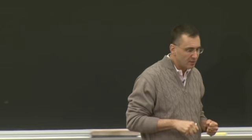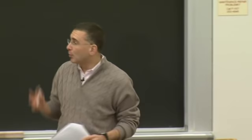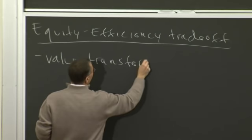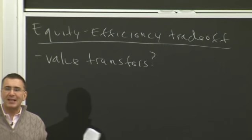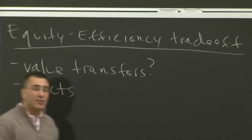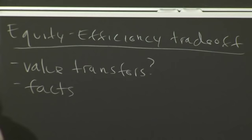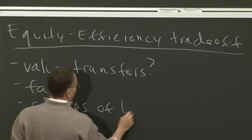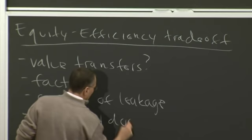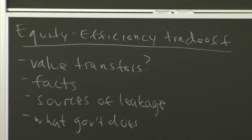We'll cover this in four steps. First, how does society value transfers — how does society think about the value of a dollar for Bill Gates versus a dollar for a poor person? Then, we'll look at the facts on income distribution: how has the distribution of dollars changed over time in the US and how do we compare internationally? Then we'll talk about the sources of leakage — what causes the equity-efficiency trade-off in practice? And finally, what does the government do to redistribute resources from higher to lower income groups?